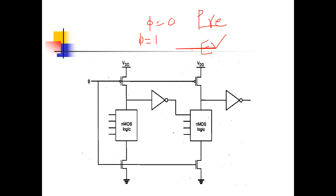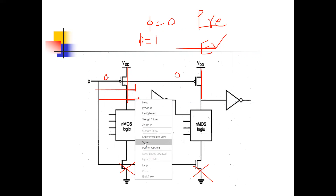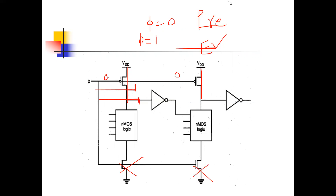Evaluate means the output depends on the condition of the input. When phi equals 0, PMOS is ON and NMOS is OFF. The clock 0 is applied to the PMOS gate and the bottom NMOS gate. So for phi equals 0, the PMOS is on, and the output node capacitance is charged up to VDD through that path. After charging, it will be full VDD — logically, it is 1.